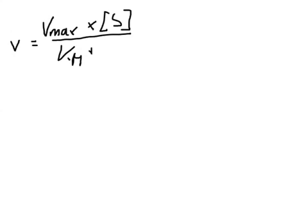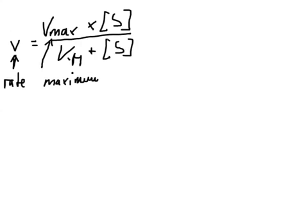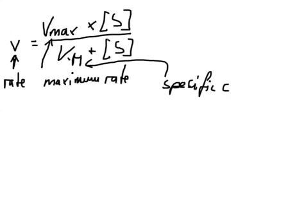This one here is the rate or the speed—how fast the enzyme can turn over and process the substrate. Vmax is the maximum rate at which this enzyme can process. Km is a specific constant, specific for each enzyme and each substrate.